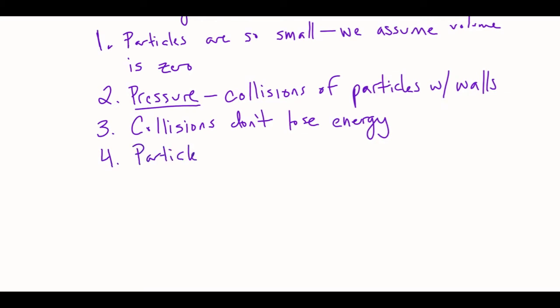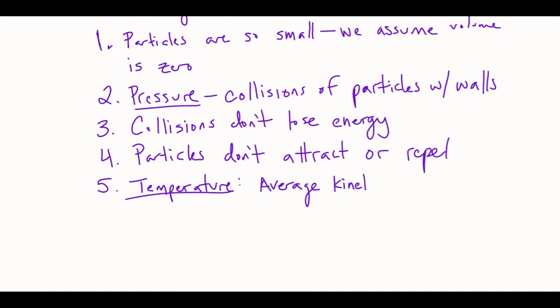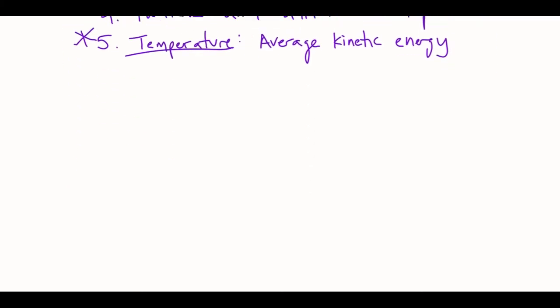Fourth thing is that particles don't attract or repel each other. This one's also not true in the real world, but it's really hard to study gases that are so tiny without it. And last thing, also already in your notes, is that temperature is the average kinetic energy. So it's how fast things are moving. If they are hot, they're moving really fast, or if they're cold, they're moving really slow. The pressure and temperature, two and five, you should already have written down somewhere. It's just an important part of this theory.